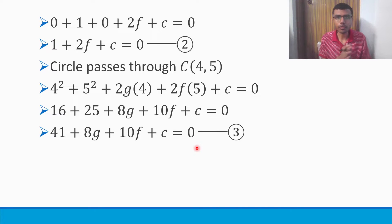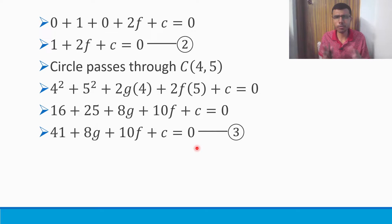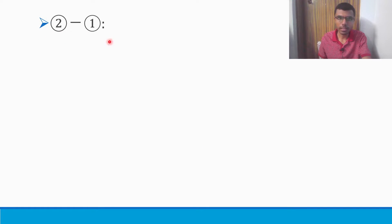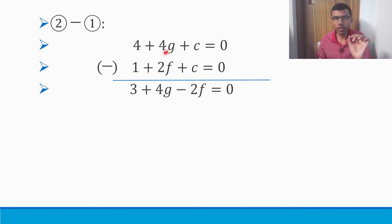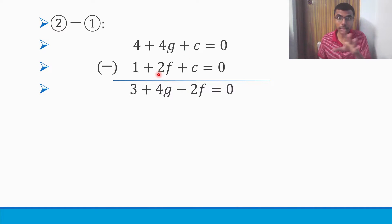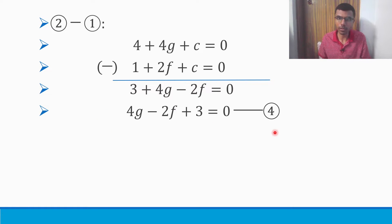Now I got the 3 equations. What I'm going to do is equation 2 minus equation 1, and next equation 3 minus equation 2. There are 3 unknowns: G, F, C. So first I'm going to eliminate C. Then I'm going to solve for G and F. Equation 2 minus equation 1: please remember there is going to be a change of sign. 4 minus 1 is 3. There is no G term in the second equation, so 4G minus 0 is 4G. There is no F term in the first equation, and 2F has a minus sign, so 0 minus 2F is minus 2F. C minus C cancels out. So the result is 4G − 2F + 3 = 0. This is my fourth equation.